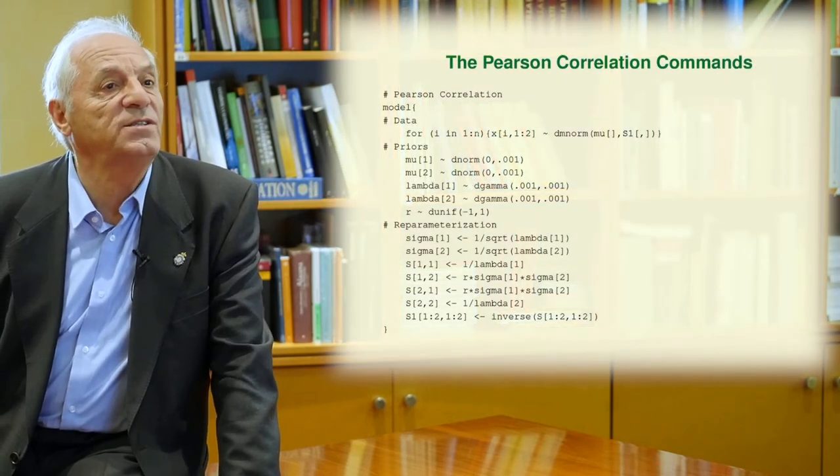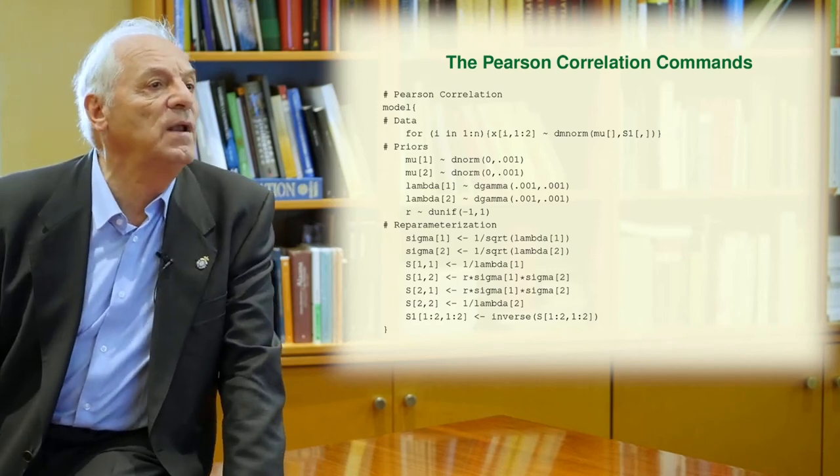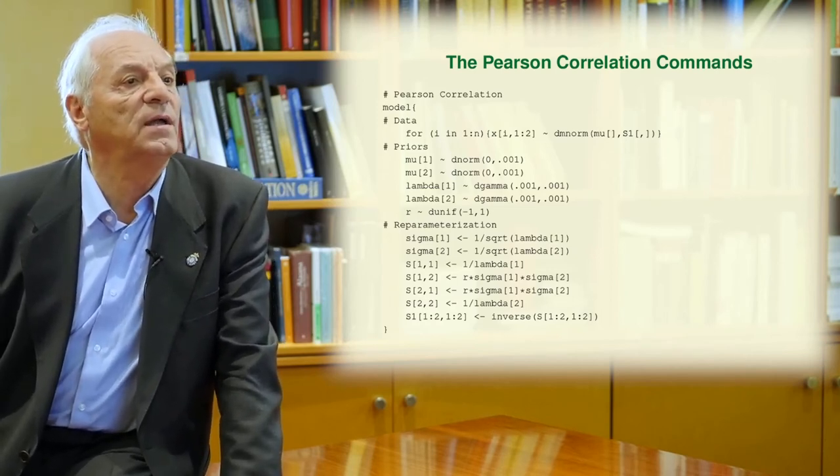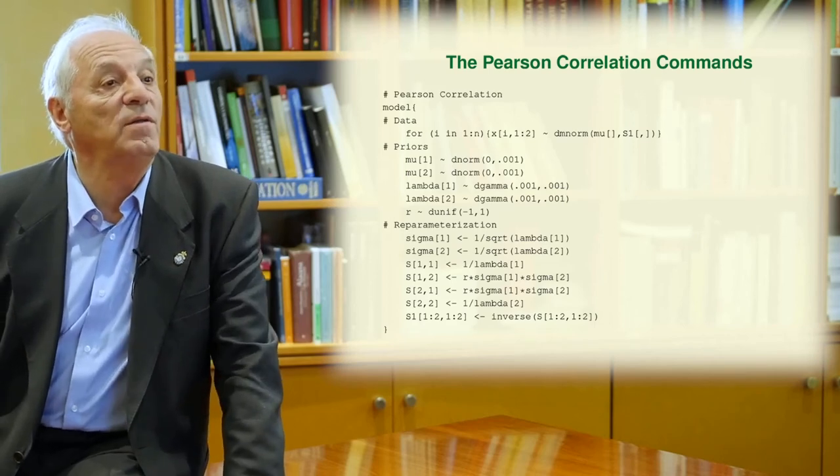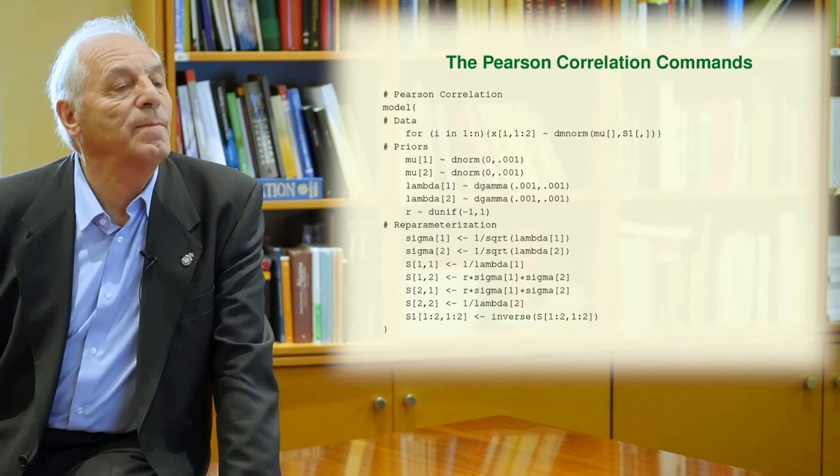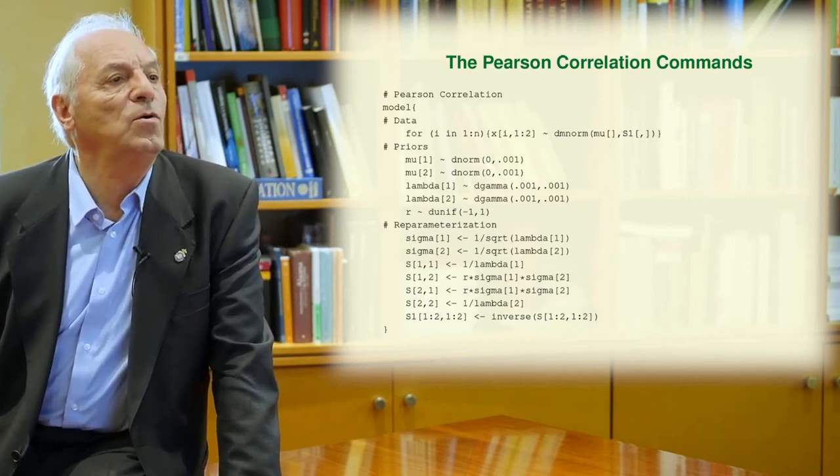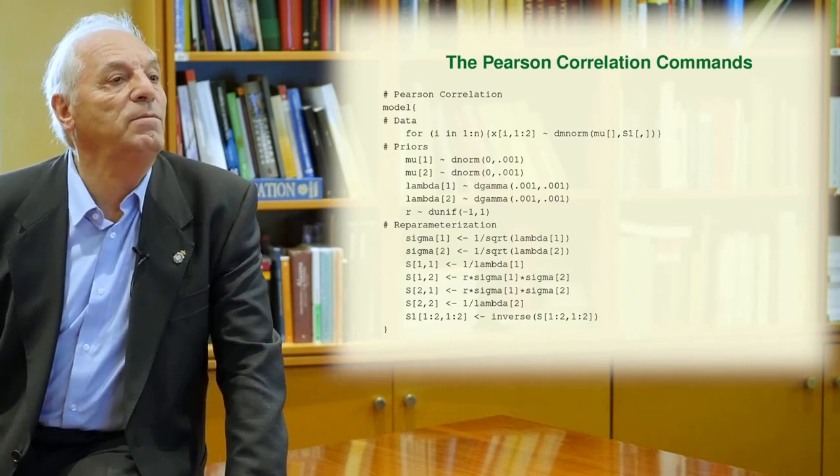The present slide shows you the commands of the Pearson correlation model. And then you have the first part, that is the model. You define the model, which is a normal model with the means mu and s1. The priors are defined later by mu1 and mu2 as normal random variables.